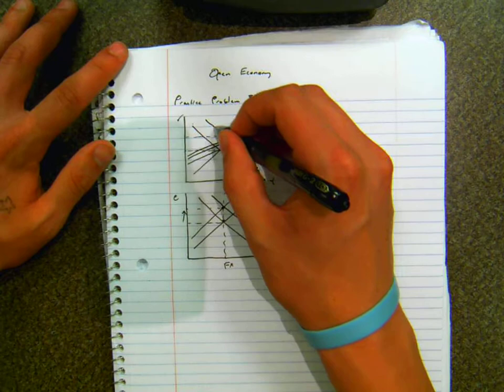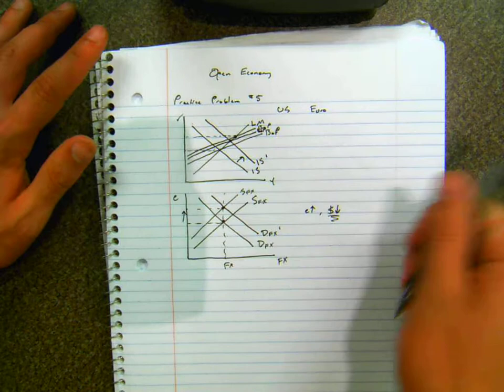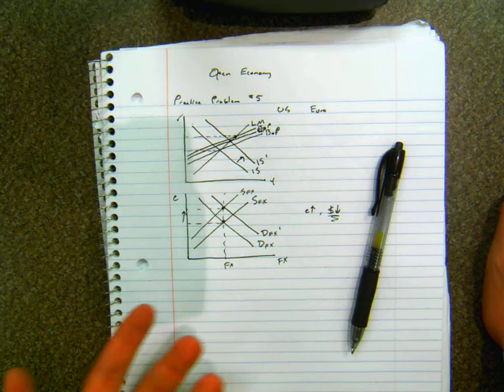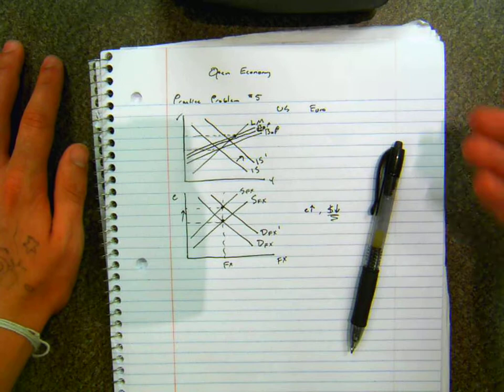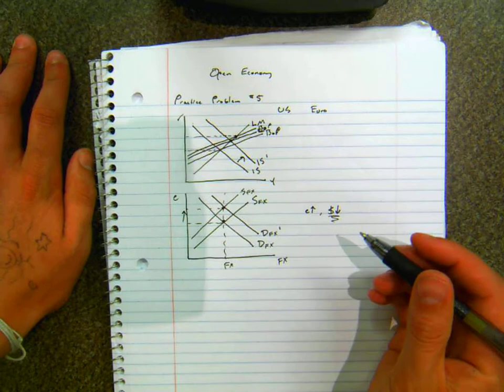And the IS curve moves out because now that dollars are worth less than they were before it's easier to get them essentially. You now need less euros to get a dollar. So if you have euros and you want to invest in the US economy you can now invest more of your euros into that US economy because the dollar is now weaker. So now we're at this point right here.